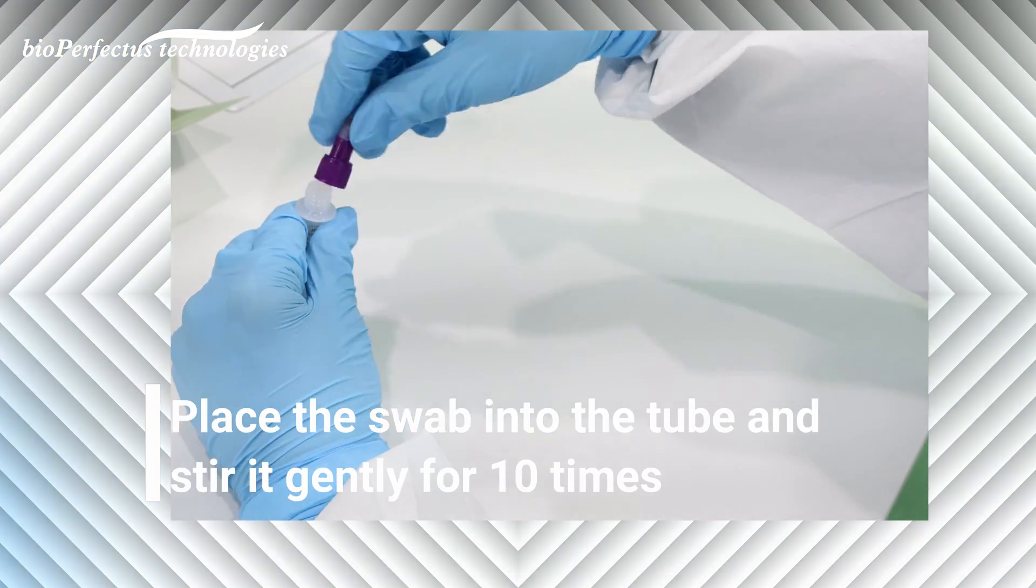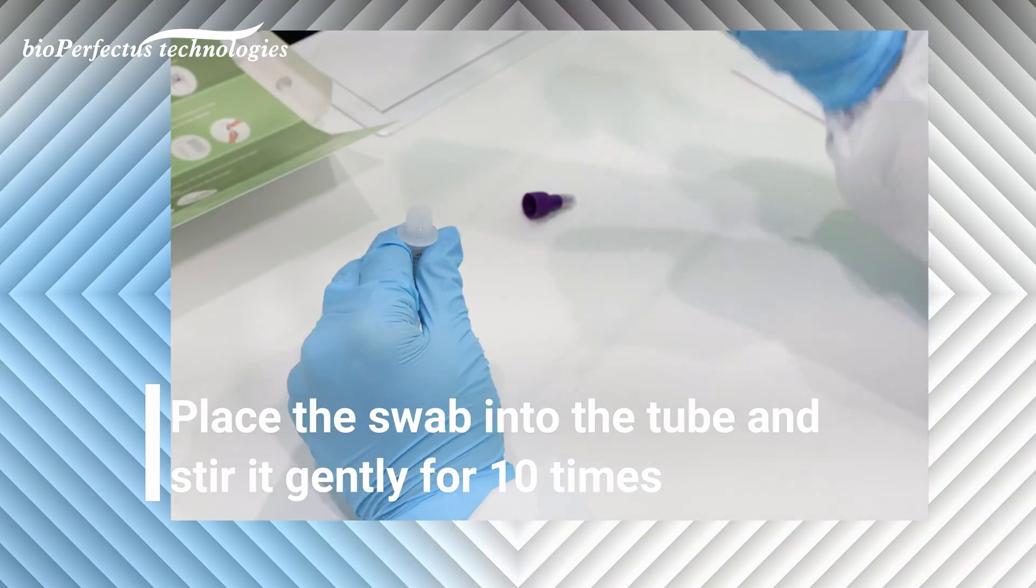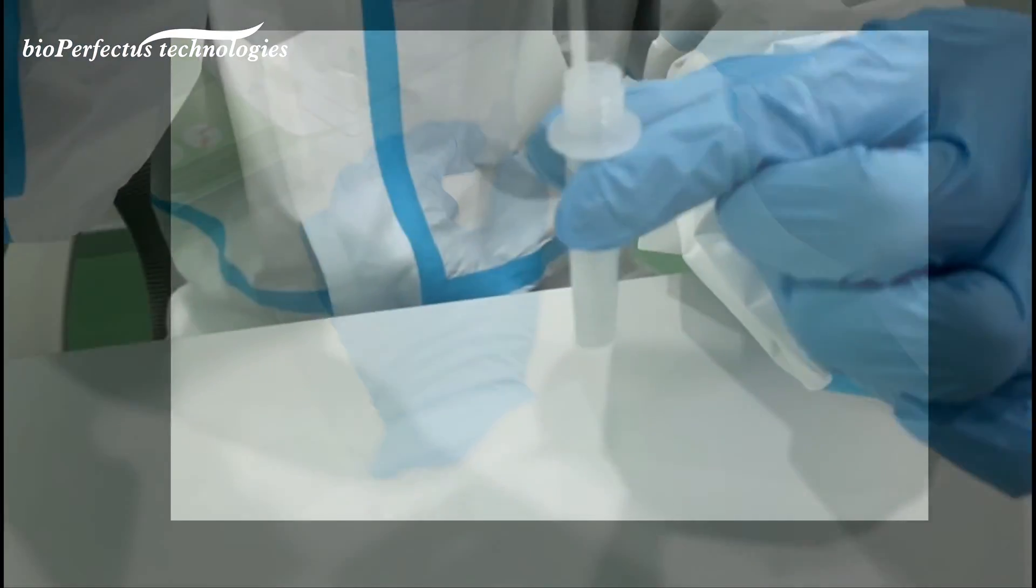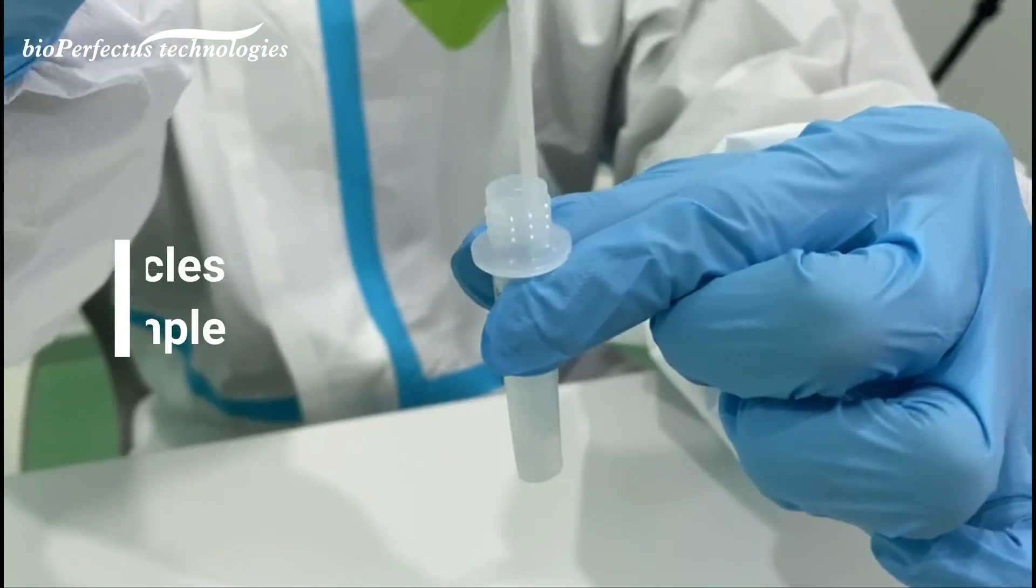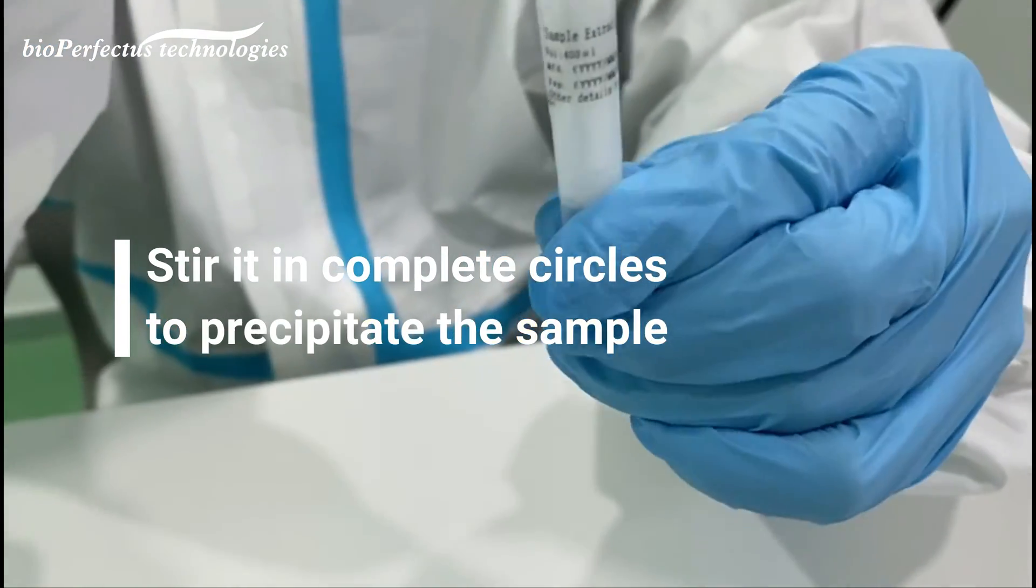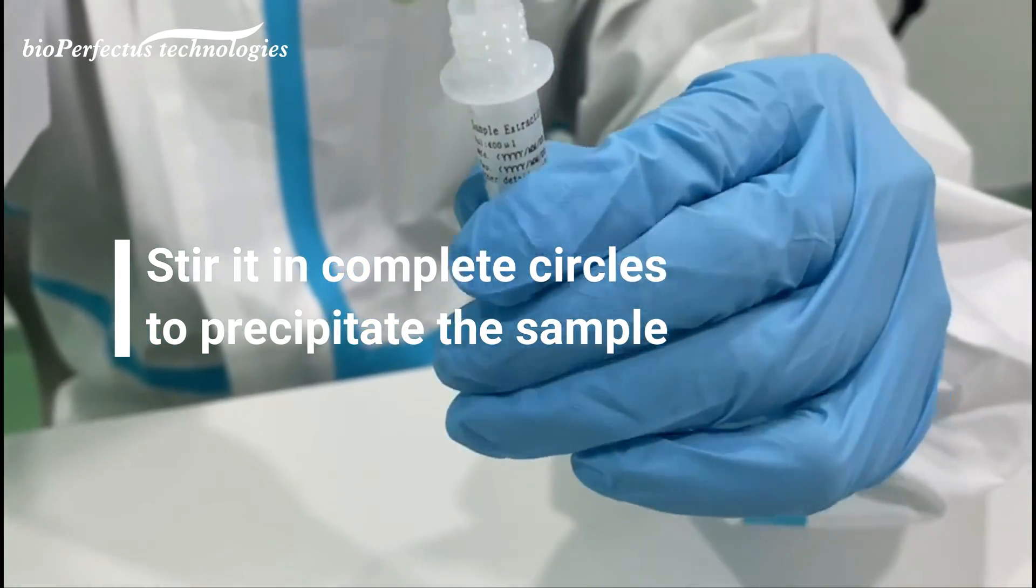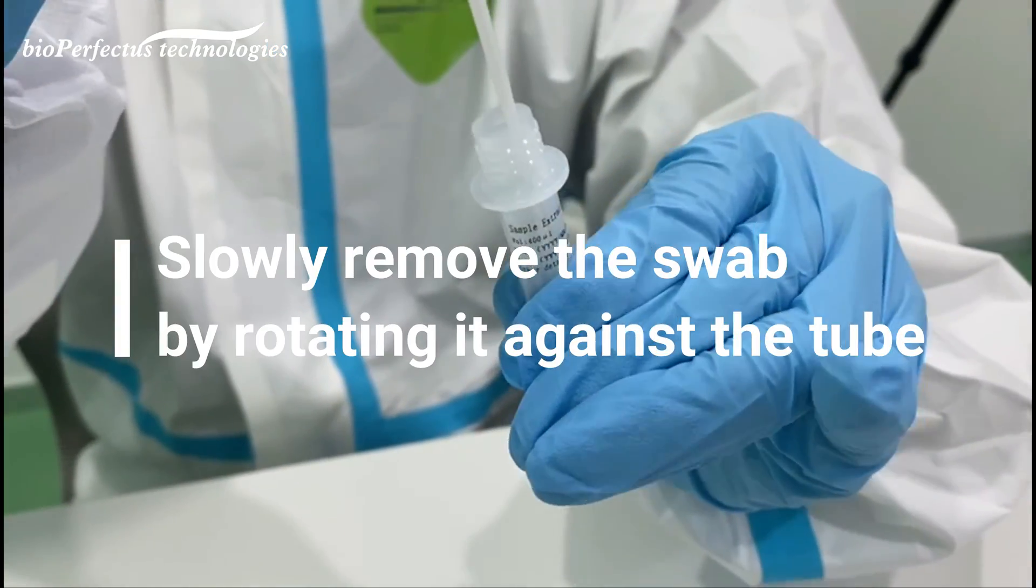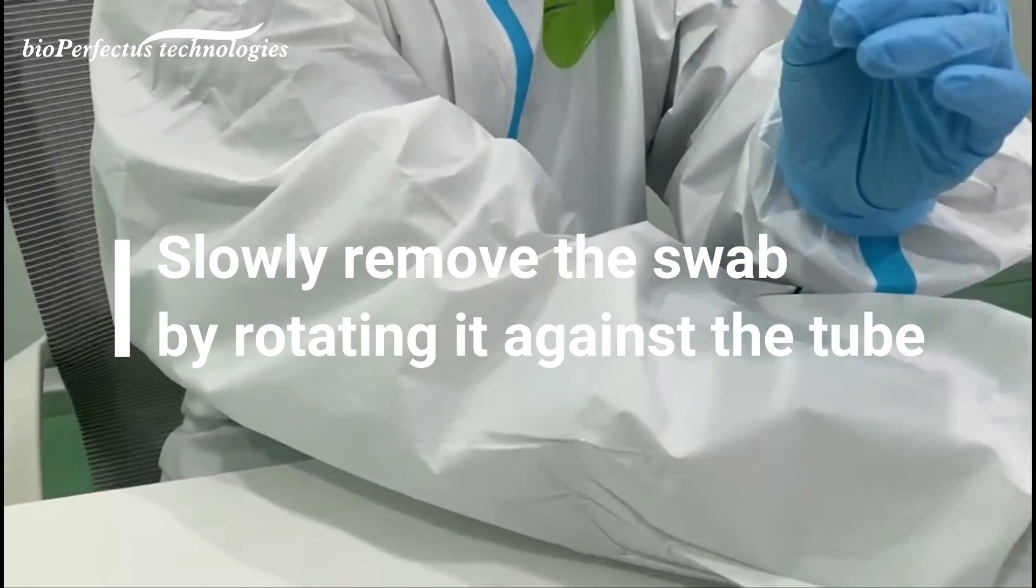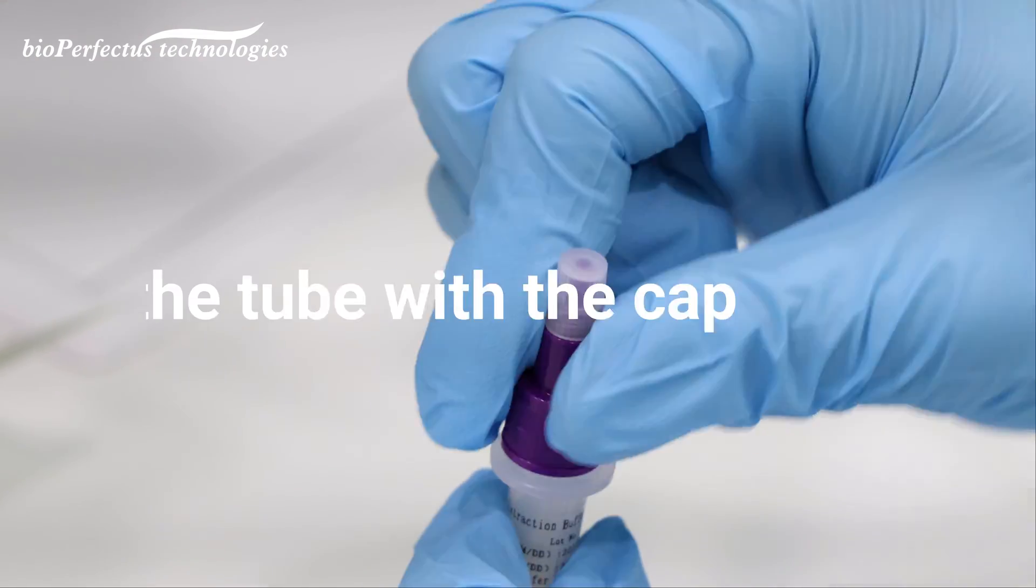Place the swab into the tube and stir it gently for 10 times. Stir it in complete circles to precipitate the sample. Slowly remove the swab by rotating it against the tube. Close the tube with the cap.